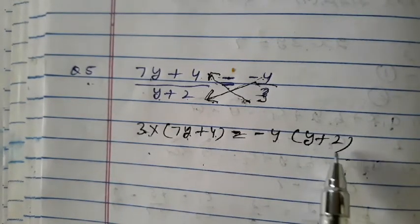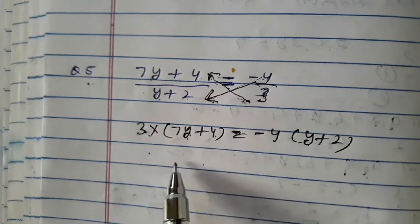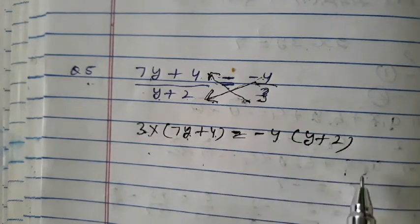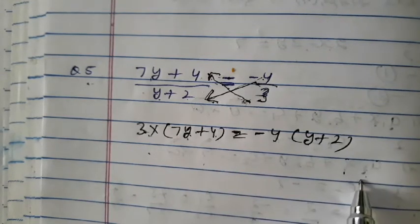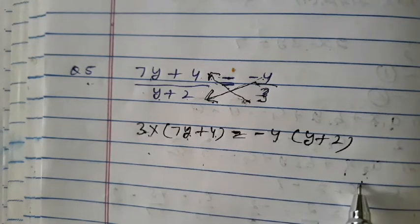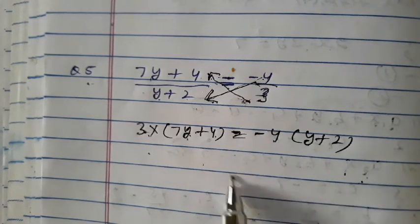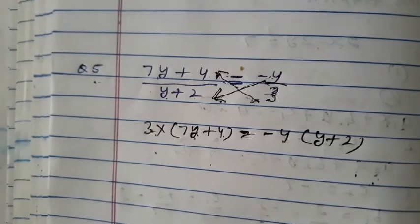Now take all the variable terms to one side and all the constant terms to the other side. Now do it yourself after this.